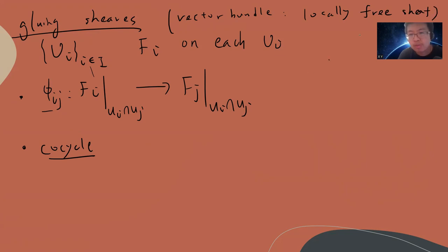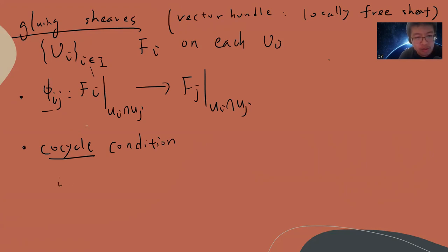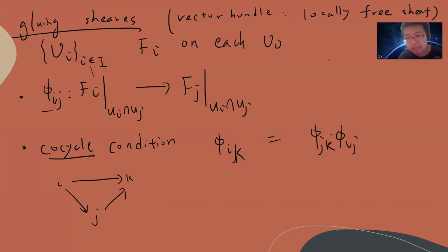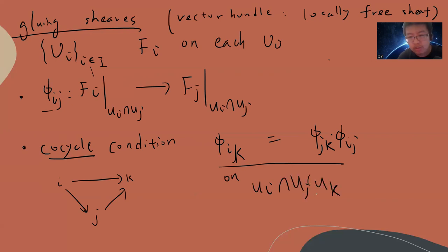There is also a cocycle condition. It looks like this: phi_{ki} composed with phi_{ij} equals phi_{kj}, meaning i maps to j, j maps to k, and i maps directly to k. This condition is required on the triple intersection U_i ∩ U_j ∩ U_k whenever that intersection is non-empty. If it is empty, you don't need any condition.